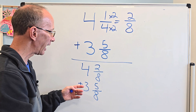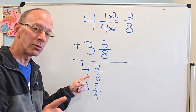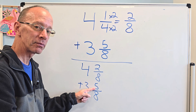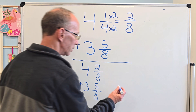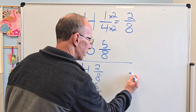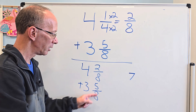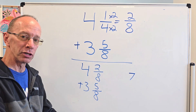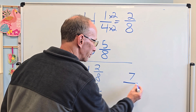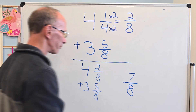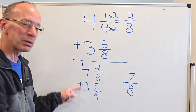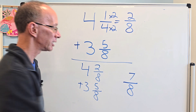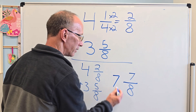Now you can see this is easy to work with. All I have to do now is add my numerators first. So 2 plus 5 equals 7. So I'm going to put 7 right here. And then my denominators — if they are the same, keep them the same. So I put my denominator right here: 8. And then 4 plus 3 — these are whole numbers — so 4 plus 3 equals 7 right here.